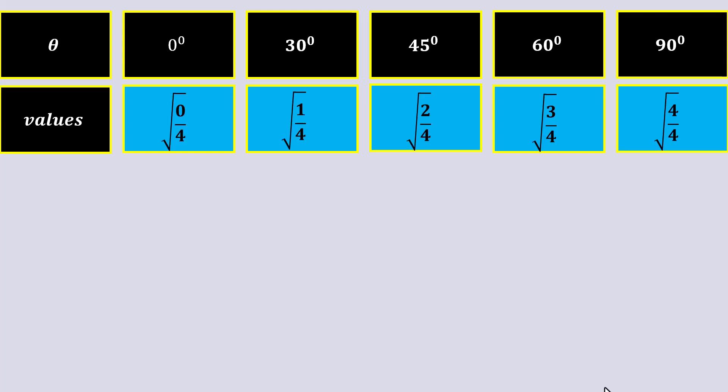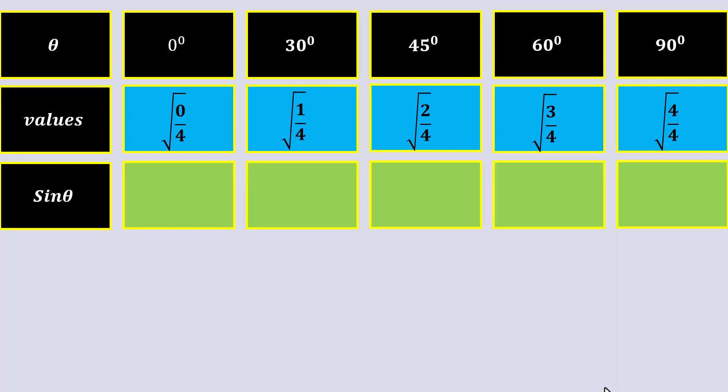These are the values of sine theta. So, we can simplify: under root 0 over 4 as 0, under root 1 over 4 as 1 over 2.